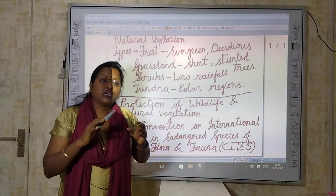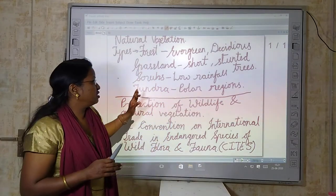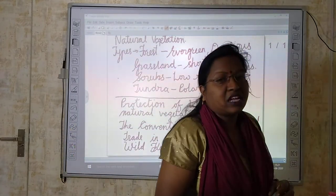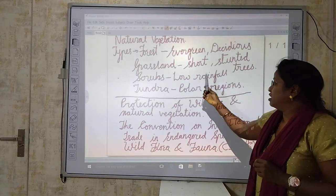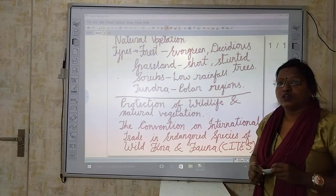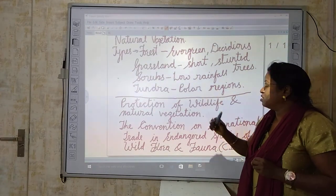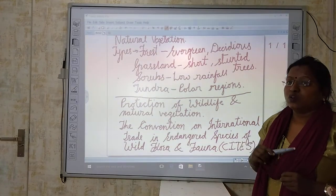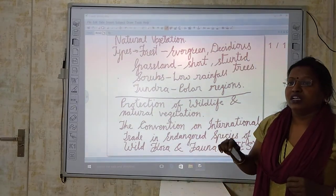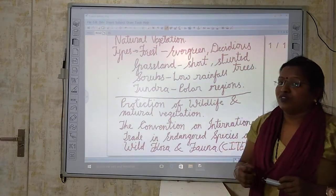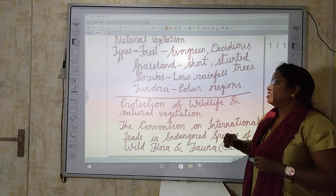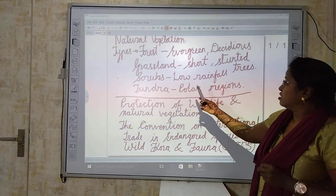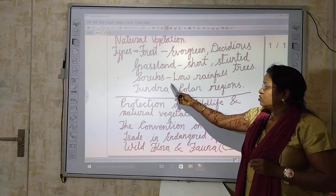The third type is scrubs. Scrubs are vegetation that grow basically in low-rainfall areas or desert areas. These types of plants are suitable for such conditions because their roots are very long, reaching down to underground water levels to fulfill their need for water, and less water is lost through their leaves.